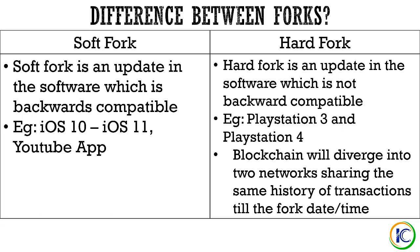The same goes with Android as well. Say if you're running Android Marshmallow on your Samsung Galaxy S7, you can roll back to Android Jelly Bean and your Samsung phone will still work fine. The only thing is you won't get the features that are on the latest Android Marshmallow. So that's what a soft fork is. If people don't want to upgrade to the latest version of a blockchain, they can still use the older blockchain but won't get the newest and advanced features.